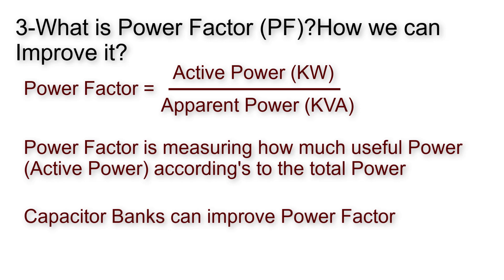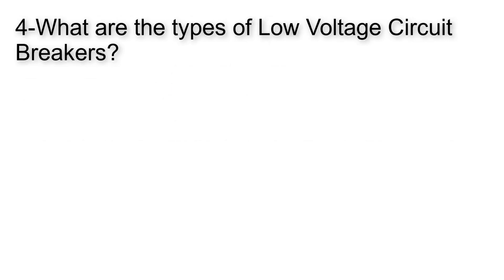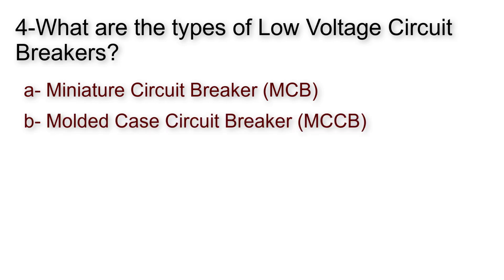What are the types of low voltage circuit breakers? Well, three main types of circuit breakers are used as low voltage circuit breakers. Miniature circuit breaker which is rated up to 125 amps, molded case circuit breaker, and at last power air circuit breaker.